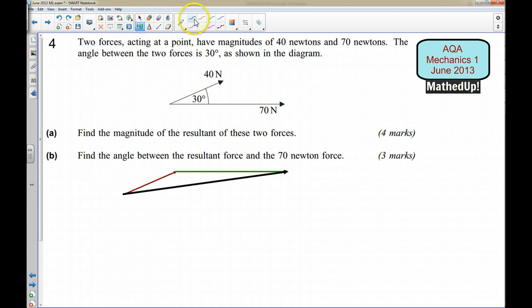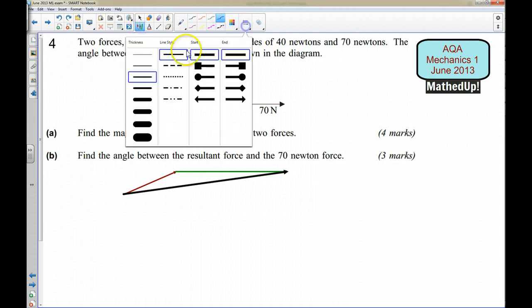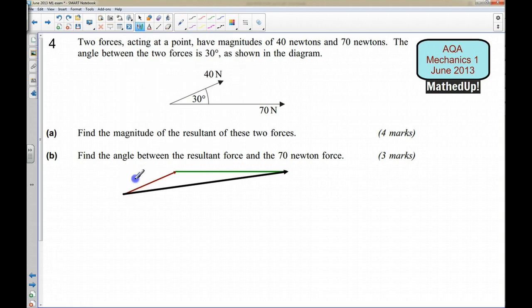Now I can label all this up. We've got 40 newtons here and we've got 70 newtons here. And as you can see the resultant is the addition of these two vectors, and the resultant here we're just going to call this F.